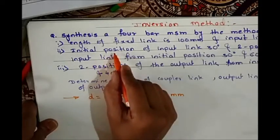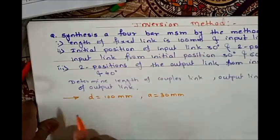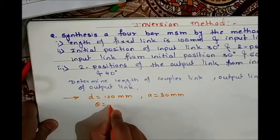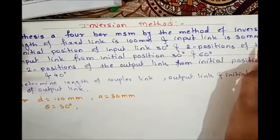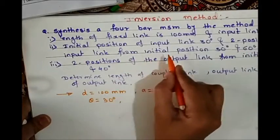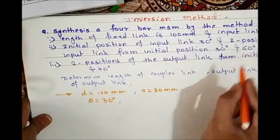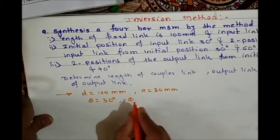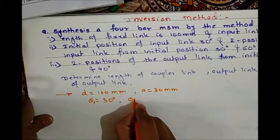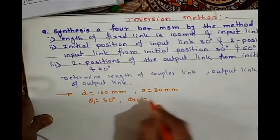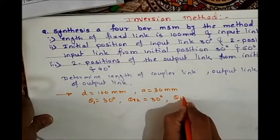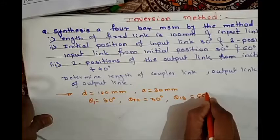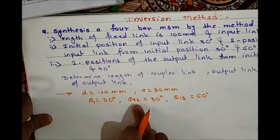The initial position of the input link is theta equal to 30 degrees. The second position of the input link from the initial position: theta 1-2 is equal to 30 degrees, and theta 1-3 is equal to 60 degrees.